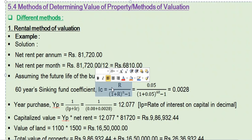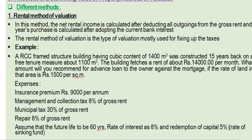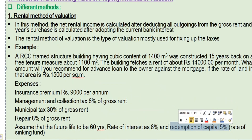The sinking fund coefficient is used to calculate the annual amount of the sinking fund and the total amount to be deposited. The sinking fund formula is r divided by [(1 + r)^n − 1], where r is the rate of interest for redemption of capital (5%). The sinking fund accumulates with a certain percentage of interest as it is deposited over time.